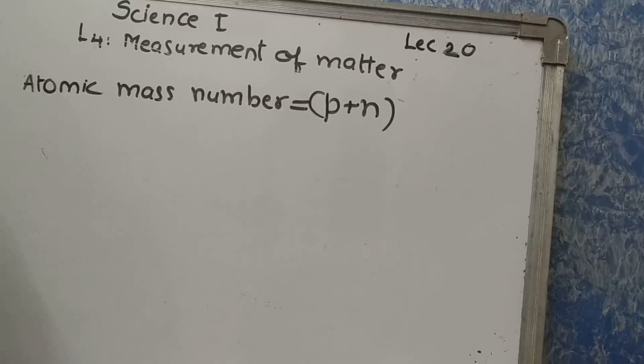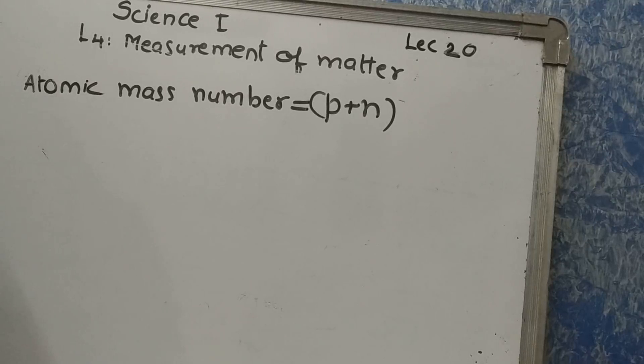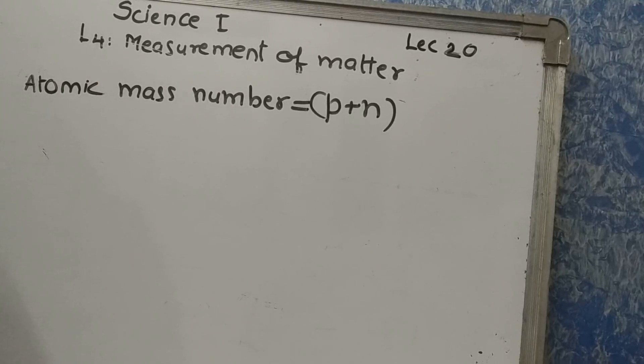An atom is very very tiny. It was not possible for the scientists of the 19th century to measure atomic mass accurately. Therefore, the concept of relative mass of an atom was introduced. The hydrogen atom, being the lightest, was initially chosen as reference atom since the hydrogen atom is the smallest one and the lightest. Therefore it is chosen as reference atom.